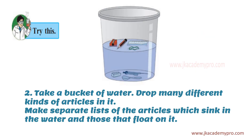Try this activity. Take a bucket of water and drop many different kinds of articles in it — all the things you find around. Make a separate list of the articles which sink in the water and those that float on it. Make two columns and think about why some things float and why some sink.